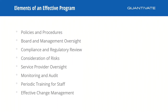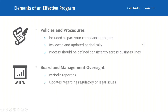The second element is board and management oversight — having reporting going to your board to identify higher-risk complaints and issues they need to be aware of. Third, compliance and regulatory review: is compliance looking at your complaints and ensuring there aren't any regulatory issues that need to be addressed? Fourth, consideration of risks — complaint management can be very risky. And fifth, service provider oversight: your vendor management program and the service providers you use need to be part of your complaint management program.